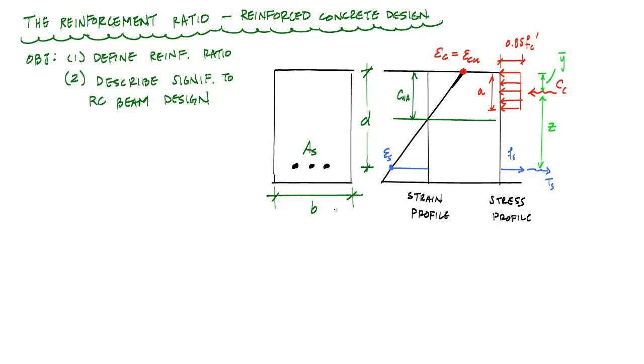I went ahead and drew out here the strain and stress profiles of a singly reinforced concrete section. The challenge with reinforced concrete beam design is that you've got to select the width, the depth to steel, and the area of steel, which depends on the number and size of bars that you choose. All these parameters can vary. So one of the parameters that we use to compare multiple sections is the reinforcement ratio.